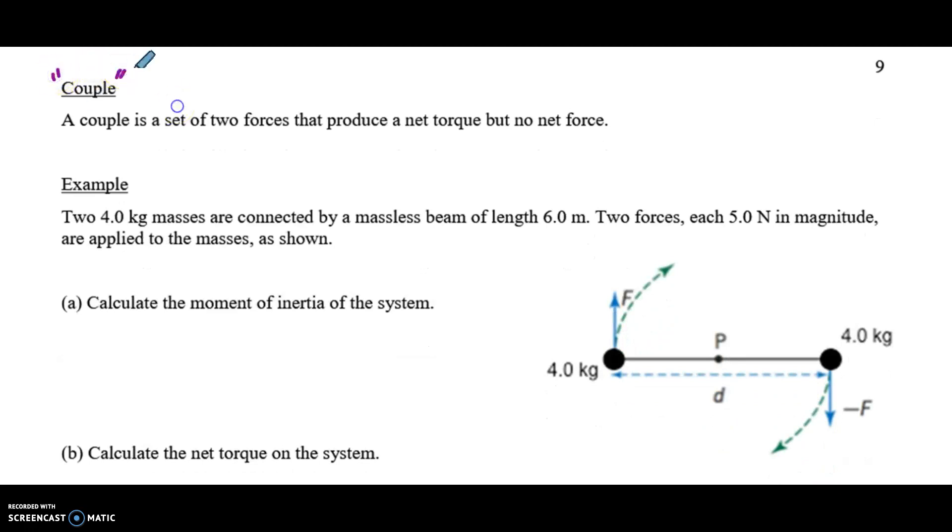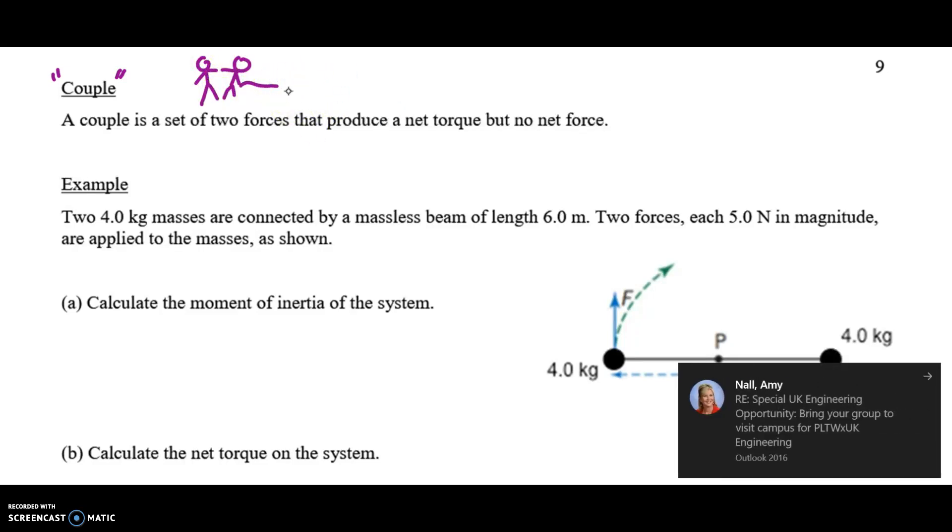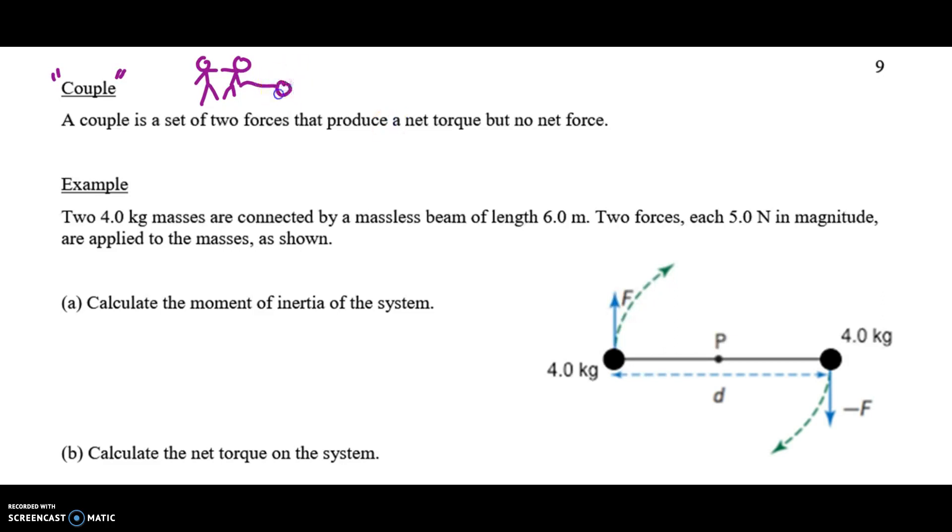In physics, a couple means something very specific. No, it's not two people who fall in love and buy a puppy and then walk that puppy around. You know, that'd be nice. There's the dog's tongue, ears. Not really sure what kind of animal this is. Not a puppy. But in physics, a couple refers to two forces that produce torque, but there is no net force.